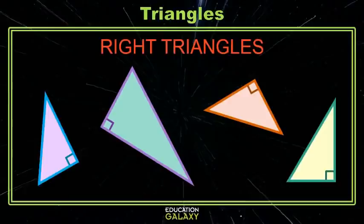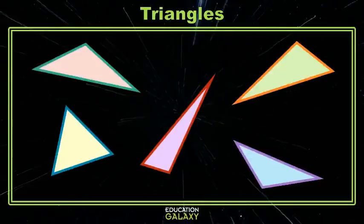But what about all of the other triangles? The ones that don't have a right angle? What do we call them? Are they left triangles? Are they wrong triangles? Well, they're going to be named based on their angle size as well.